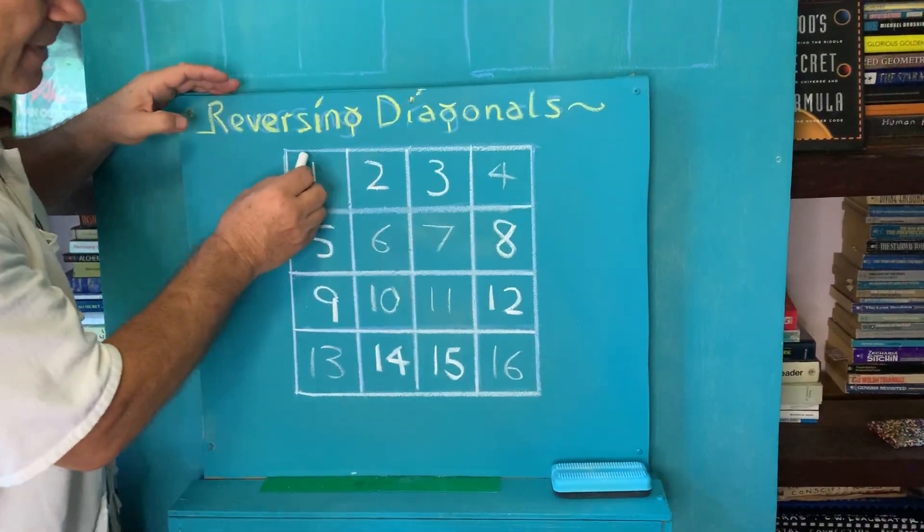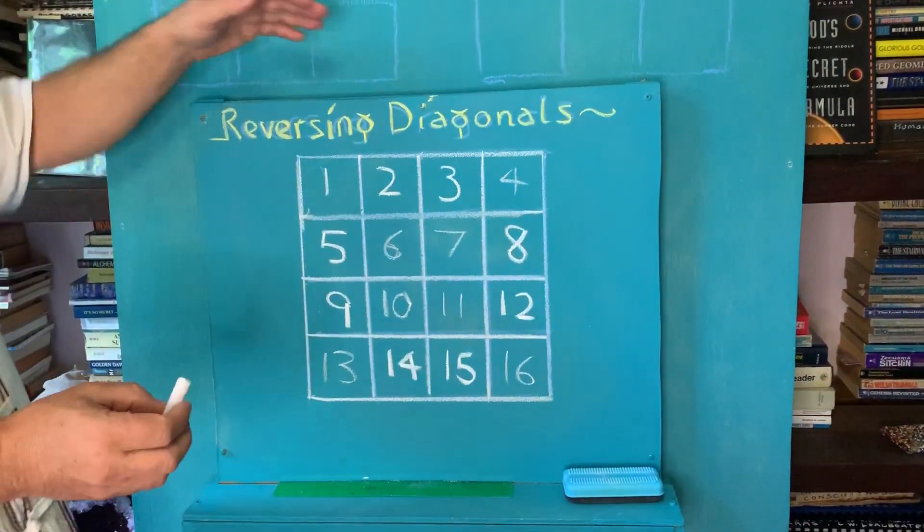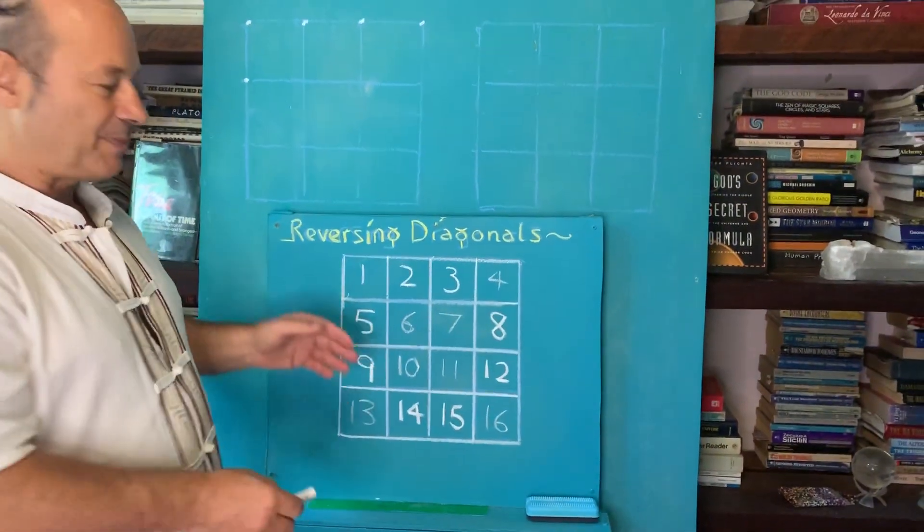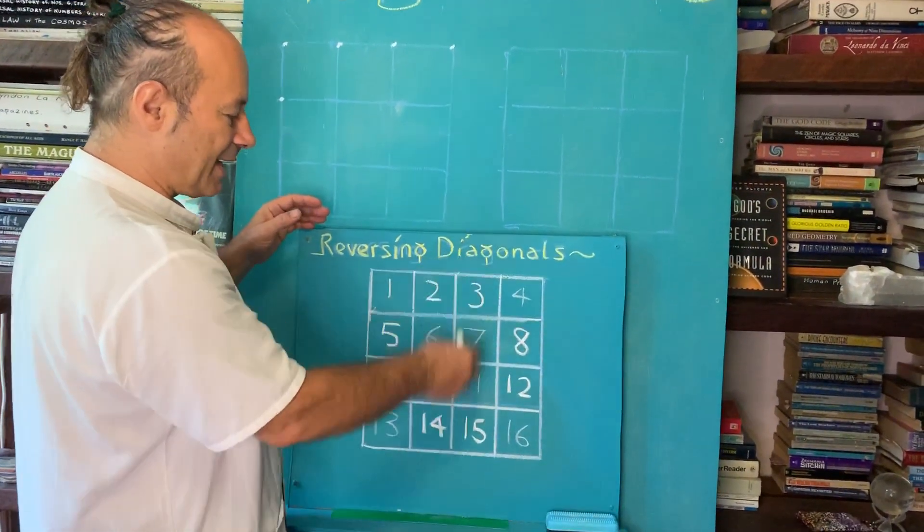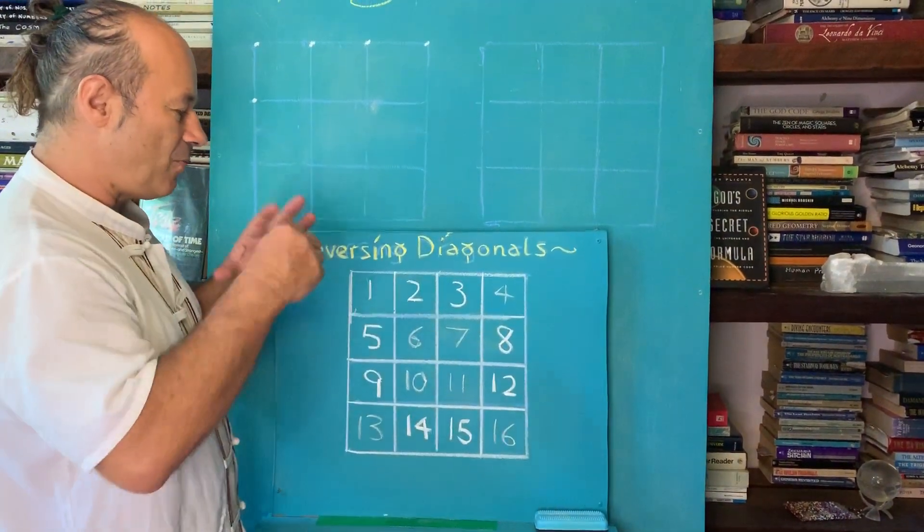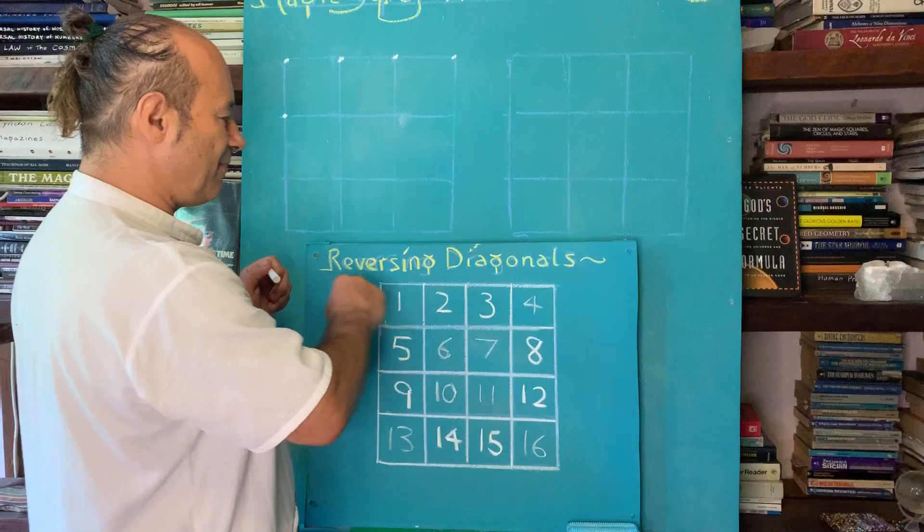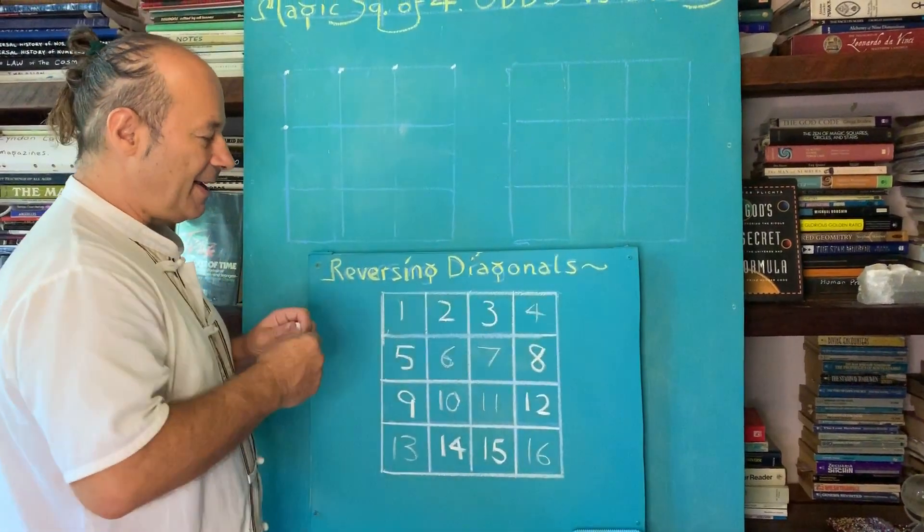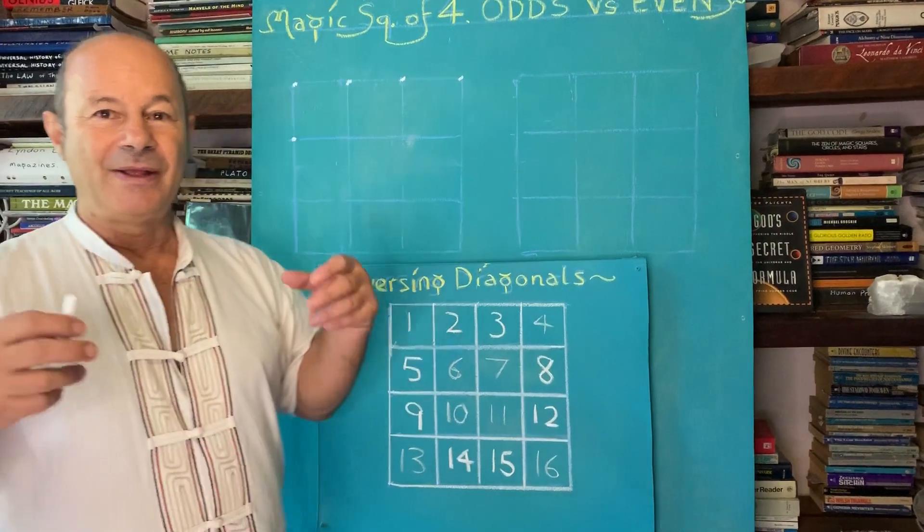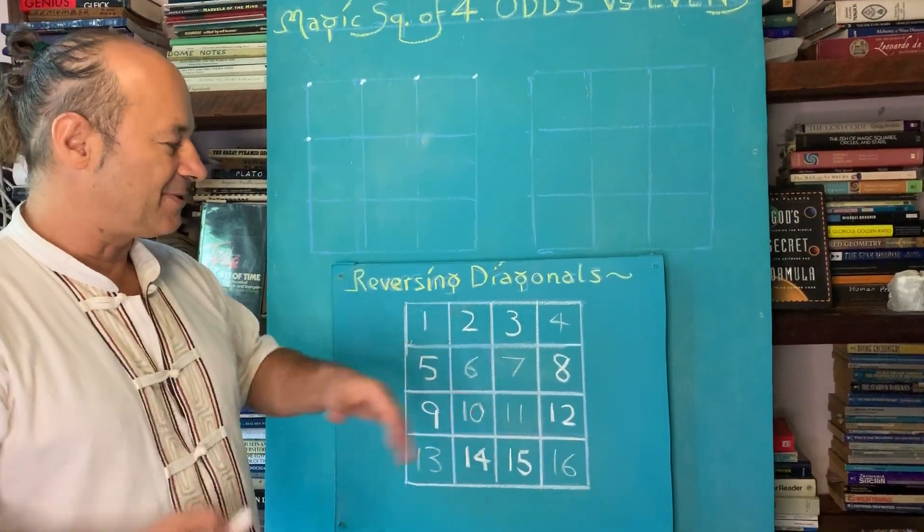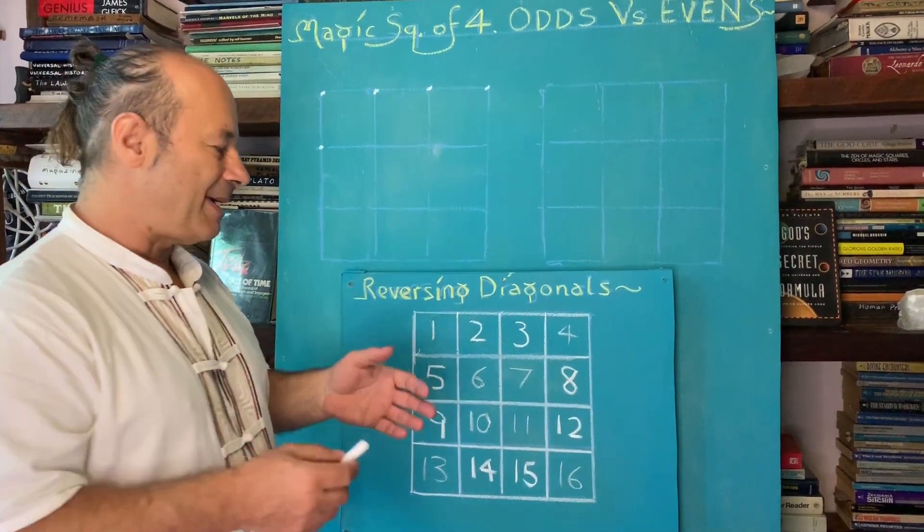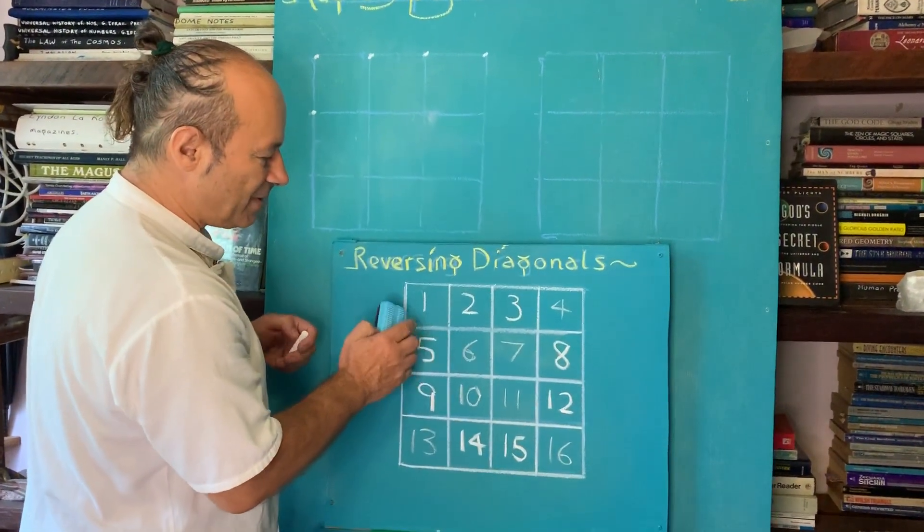You can see I deliberately went very light on some of these numbers. This is called a natural square. It's not magic because the columns and the rows do not add up to the same number 34. So I'm going to show you one step which is called the reversing of the diagonals. Just by reversing this main diagonal and that main diagonal something happens to this box of numbers.